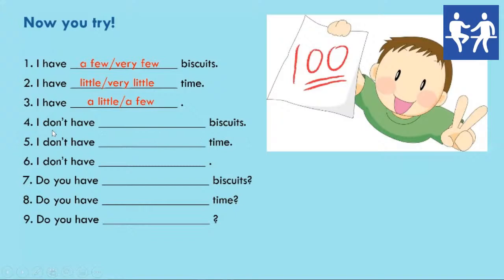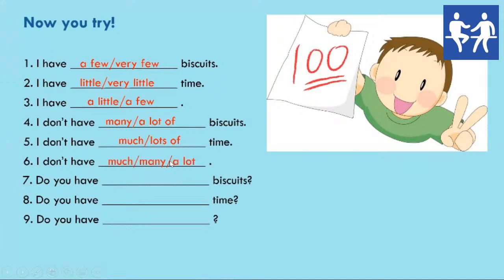Now we have a negative sentence: 'I don't have ___ biscuits.' Biscuits is countable. What quantifier can we use here? 'I don't have many or a lot of biscuits.' Again, a negative sentence but with an uncountable noun: 'much' or 'lots of.' And a negative sentence with no noun: 'I don't have much, many, or a lot' — depending on whether we were originally talking about a countable noun or an uncountable noun.